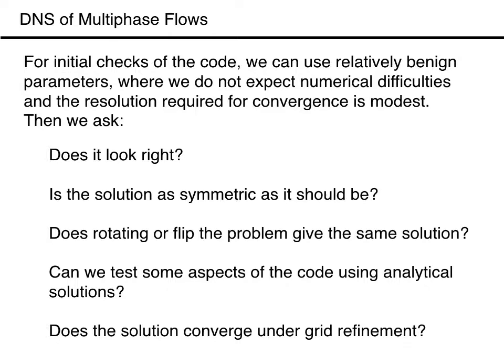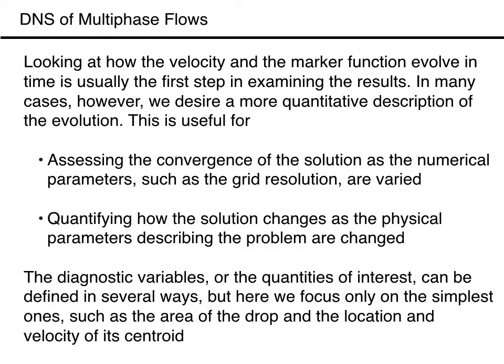For the codes that we have presented so far, we have done each of these tests for the falling drop. While checking the code for errors is usually a one-time task, examining the convergence must be done for every new problem that we simulate. Before doing that for the falling drop problem, we need to decide how we evaluate convergence. Looking at the velocity and the marker function and how they evolve in time is certainly the first step, where we usually desire a more quantitative description. Such description is useful to assess convergence as numerical parameters like grid resolution are varied, and also to describe how the solution changes as physical parameters change. The diagnostic variables, or quantities of interest, can be defined in several ways, but here we focus on the simplest ones such as the area of the drop and the location and velocity of its centroid.